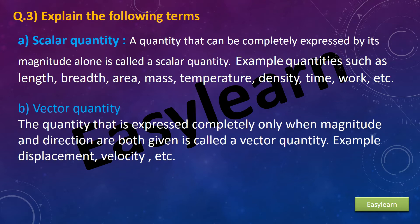B) Vector quantity. The quantity that is expressed completely only when magnitude and direction are both given is called a vector quantity. Example: displacement, velocity, etc.